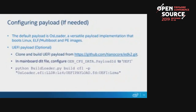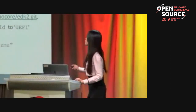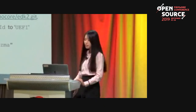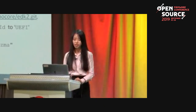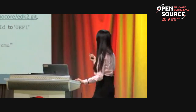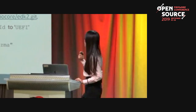Slim Bootloader supports by default an OS loader that can boot Linux, ELF, multiboot — for example Android and Hypervisor — and PE images. If you want to boot with a UEFI payload, clone the payload from the EDK2 GitHub channel and build it, change the payload ID to UEFI in the main board delta file, and build with the stated command.